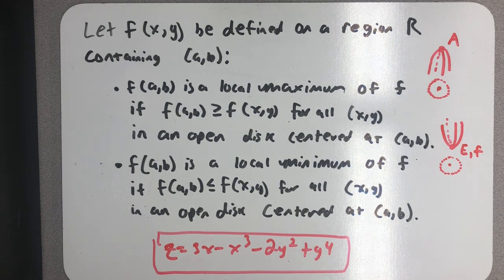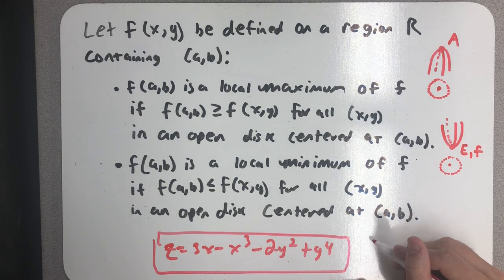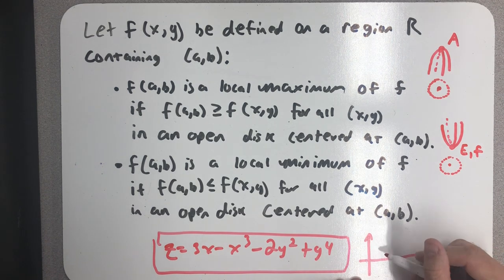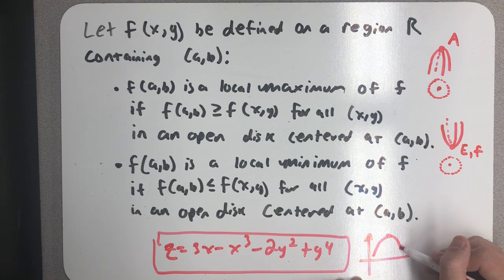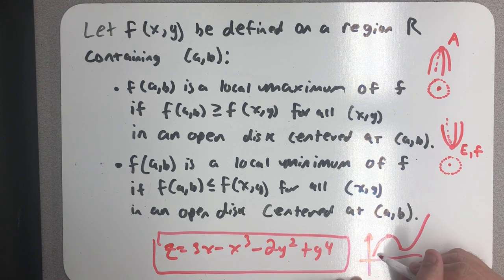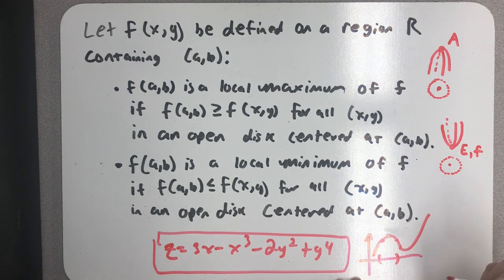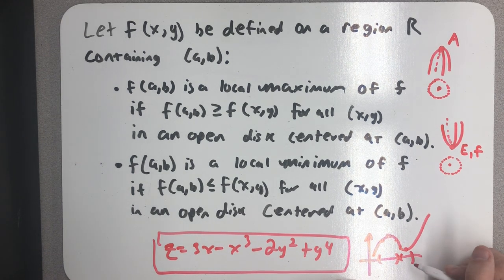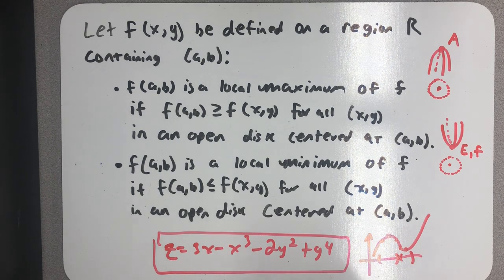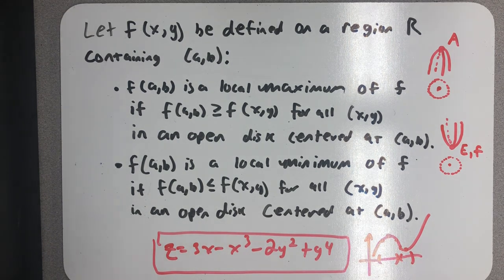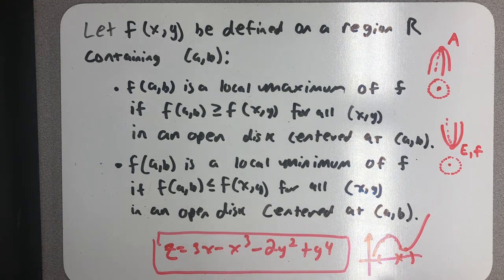So it's a very similar thought process to what we saw in Calc 1. In Calc 1, we called something a local maximum value if we could just look at a small part of the domain and make it look like the top of a mountain. And we call something a local minimum value if we could reduce to a small part of the domain and make it look like a valley. Same ideas here for us.